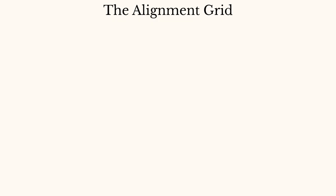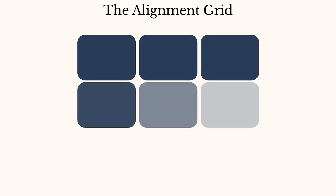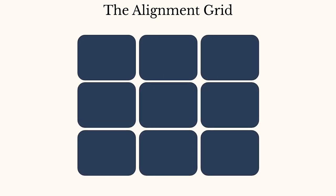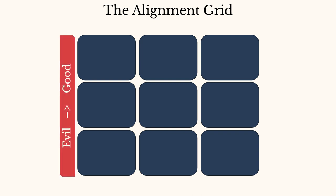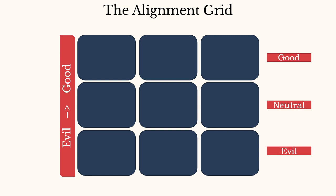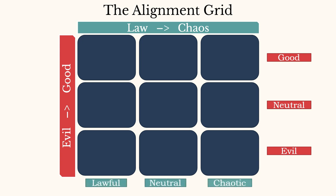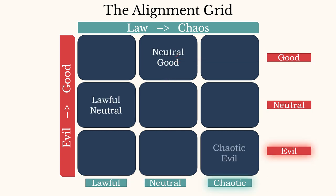The classic representation of alignment is a 3x3 grid with 9 boxes total. One axis represents a character's ethics and morality — that's called the good-to-evil spectrum — while the other axis represents the character's sense of order or rebellion, noted along lawful to chaotic. By lining up each axis, we can label the nine alignments: neutral good, lawful neutral, or chaotic evil, for example. The middle of both axes is labeled true neutral.